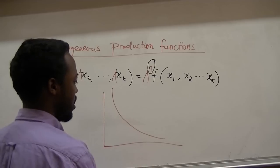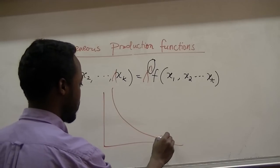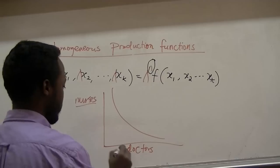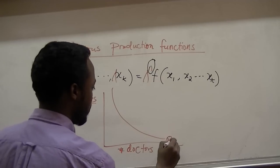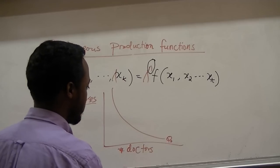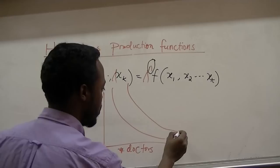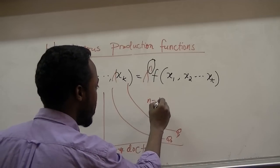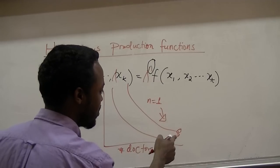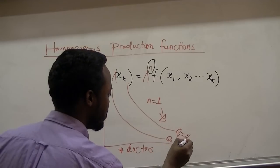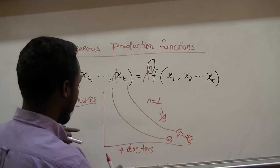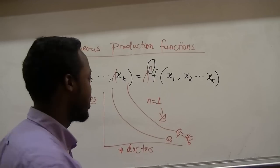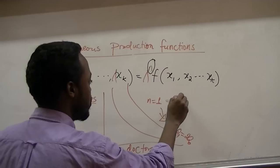For example, let's say we have an isoquant which represents a combination of number of doctors and number of nurses, and let's denote it by q₀. Now if we double our inputs we get another isoquant, let's denote this by q₁. What we are saying is that if n is equal to 1, then q₁ is two times q₀. So doubling inputs gives us twice as much output as we had before — that is constant returns to scale.